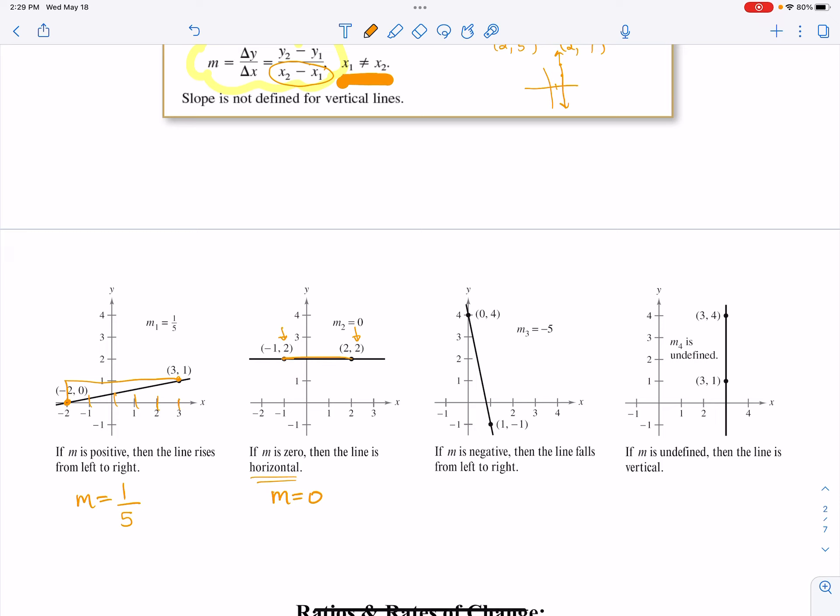In my third graph, I have an example of a negative slope. The line does go down as I read it from left to right. And if you were to count the change in Y, I count one, two, three, four, five, going down five, I'm falling five, and over to the right one, that is a slope of negative five over one or negative five.